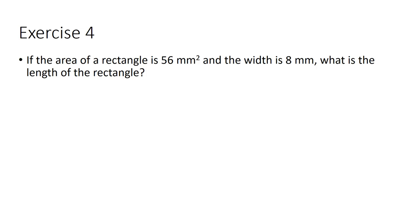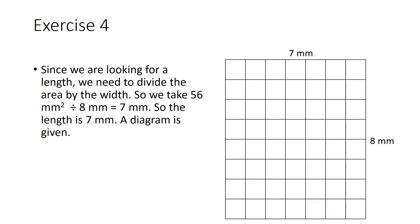In our fourth exercise: if the area of a rectangle is 56 square millimeters and the width is 8 millimeters, what is the length? Since we are looking for a length, we divide the area by the width: 56 square millimeters divided by 8 millimeters equals 7 millimeters. The length is 7 millimeters. A diagram is provided, and counting the squares will confirm 56 total. Great job and good luck!